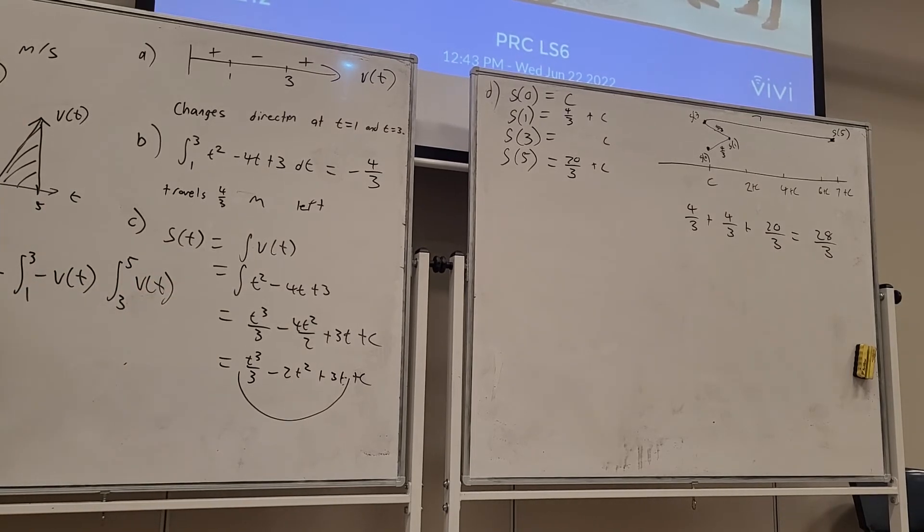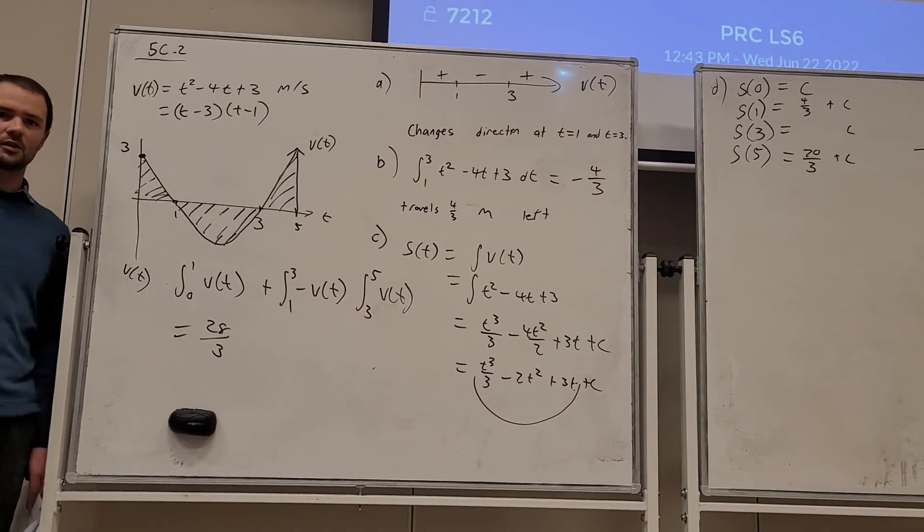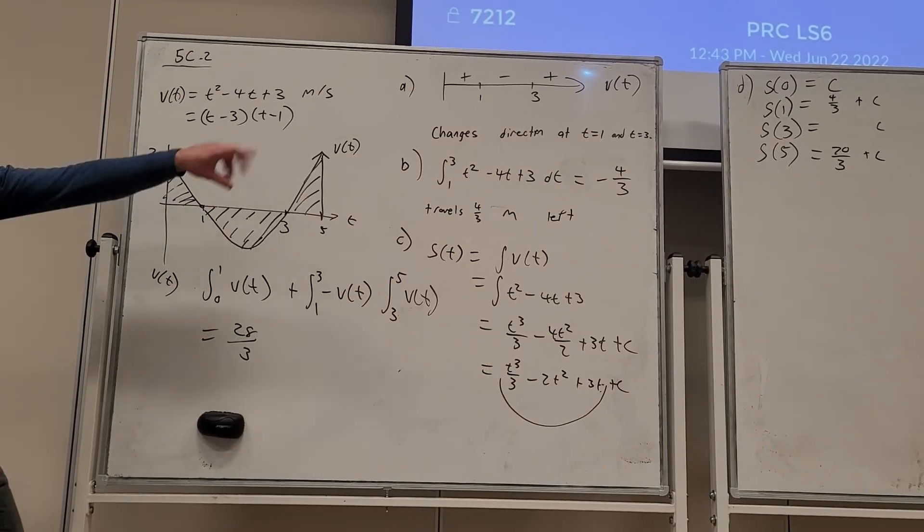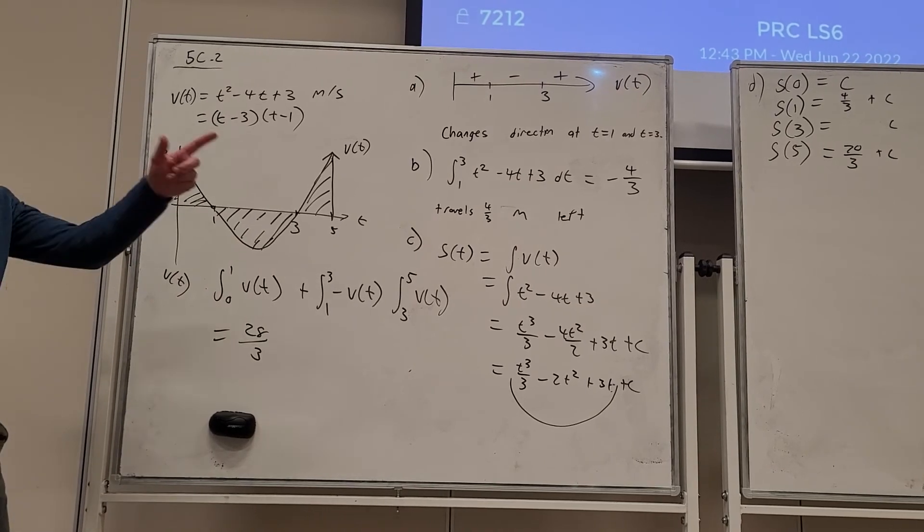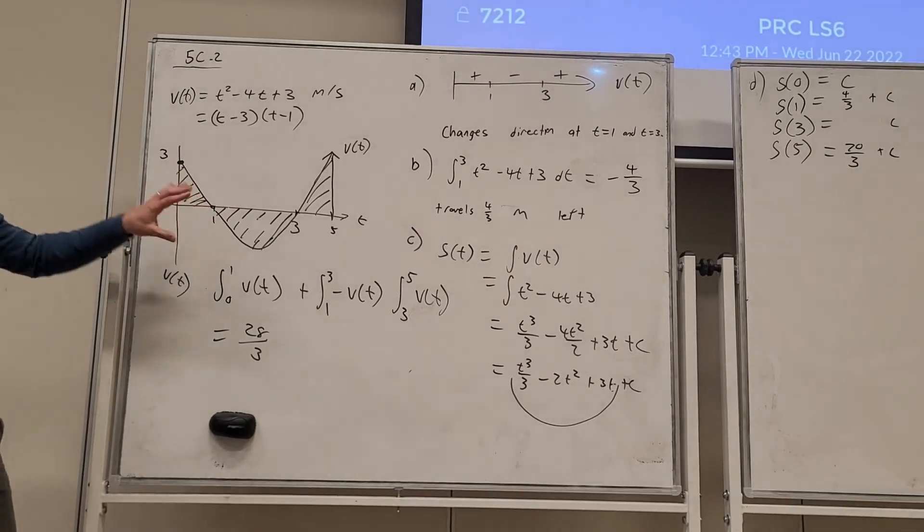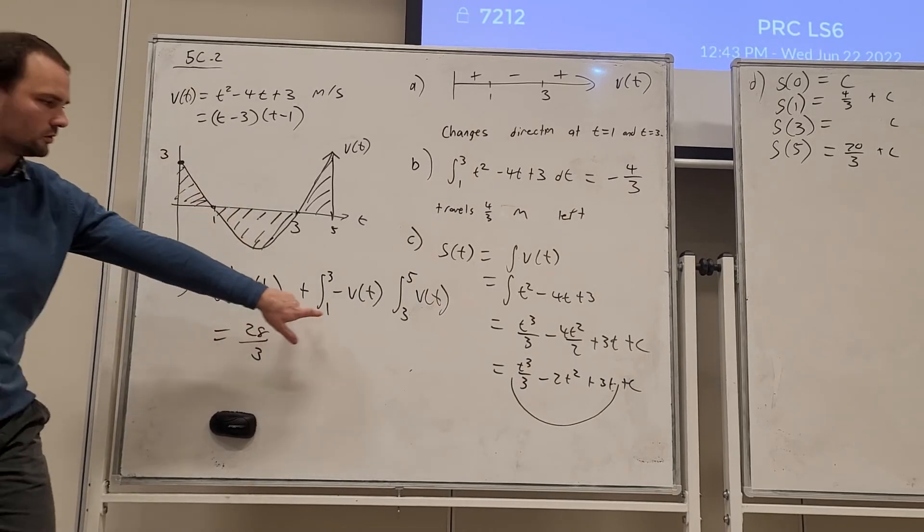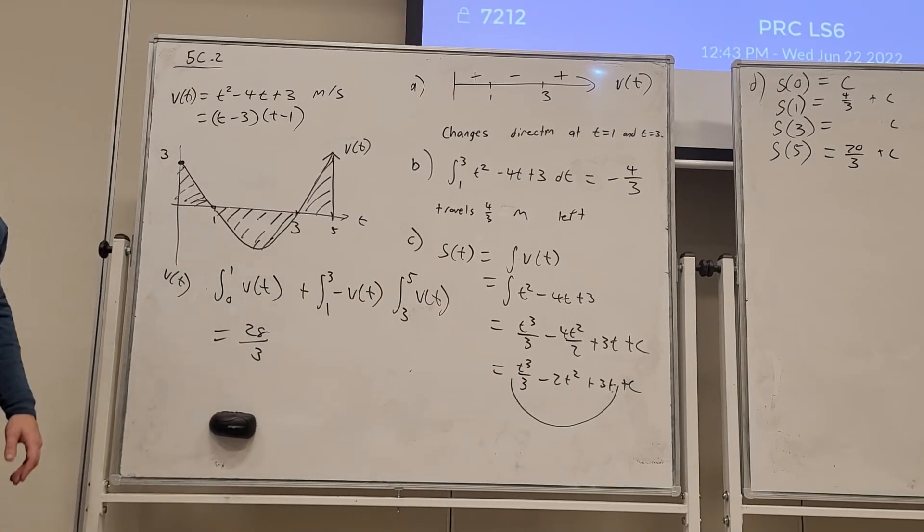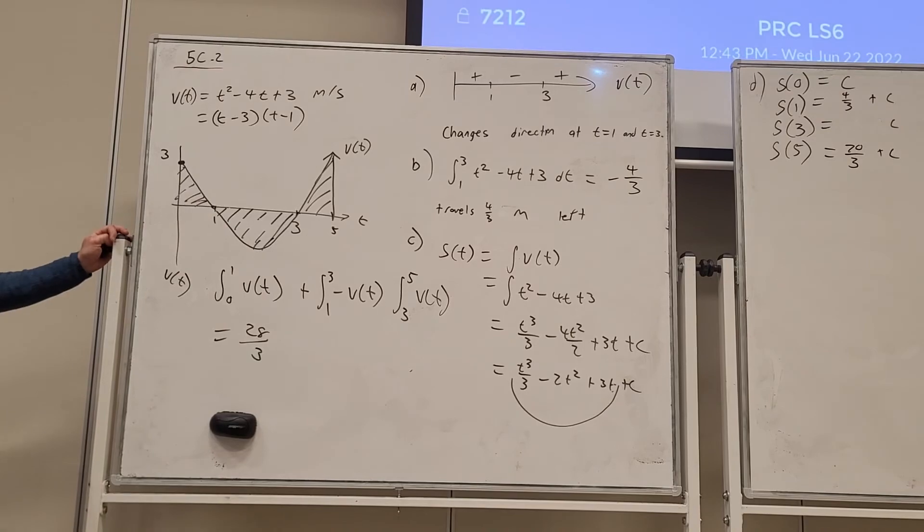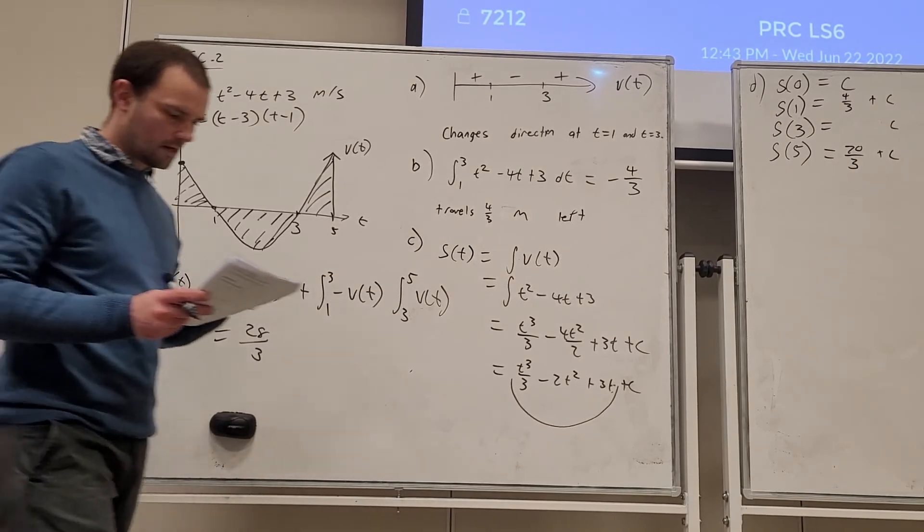If we evaluate this, we're also going to get 28/3. So the two procedures we can use, we should be competent with both of those. Using the motion diagram, we've done a lot of that in calculus. Now we're introducing you to how we can use the curve to find the distance. So that being our answer to part E.